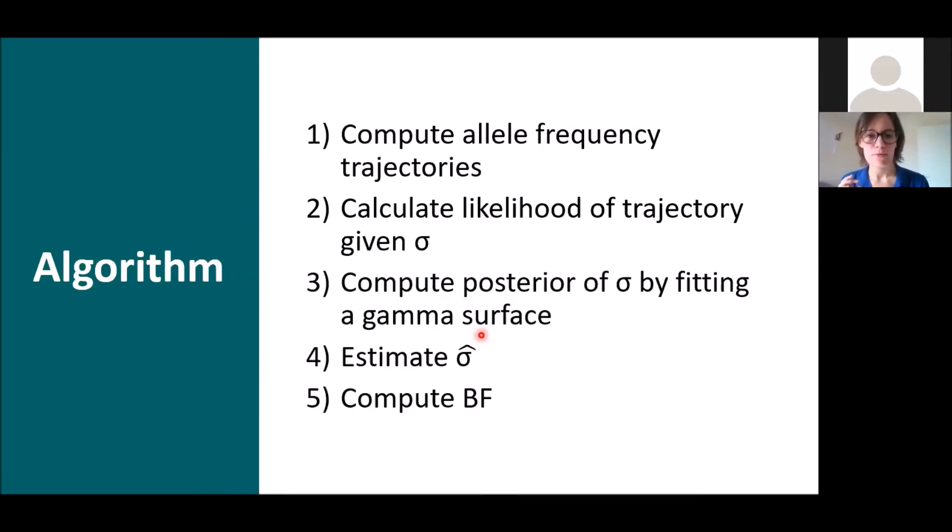And again three more steps. We compute the posterior of sigma, the posterior distribution of sigma by fitting it to a gamma surface, just the detail here, and we then estimate its mean. And finally we compute this Bayes factor that I've just mentioned. We have an estimate of sigma here and also a test statistic to give us a sense of whether we're detecting targets of selection or not.